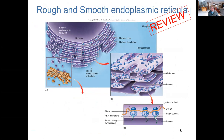The difference between rough and smooth endoplasmic reticulum often comes down to the fact that the rough ER is called rough because, looking at a scanning electron micrograph, you'd see ribosomes studded on the surface. Ribosomes are the sites for protein assembly — protein synthesis.